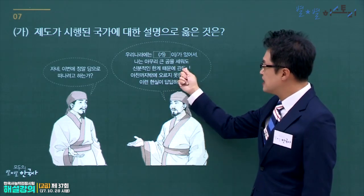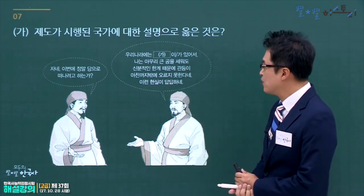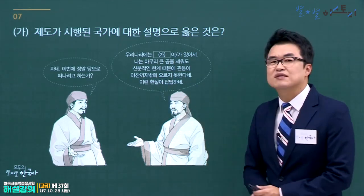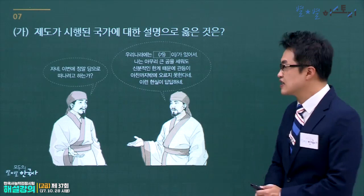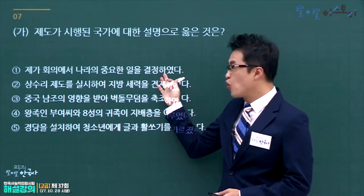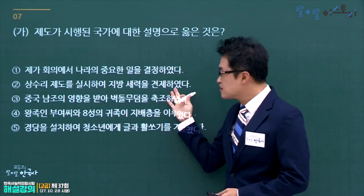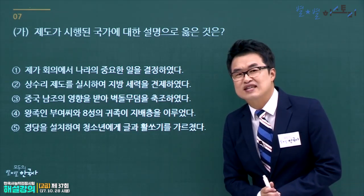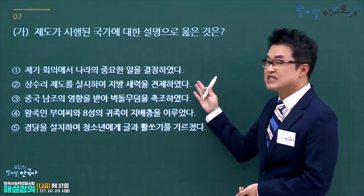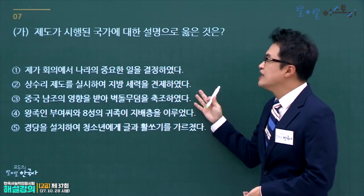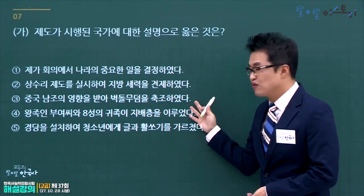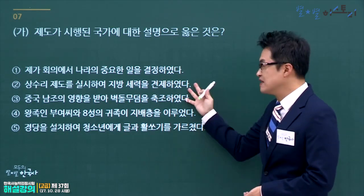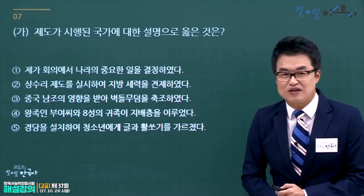골품제도에서 관등이 아찬까지밖에 못 오르는 것은 6두품에 대한 내용입니다. 신라에 대한 설명으로 옳은 것을 고릅니다. 제가회의는 고구려, 상수리제도는 신라, 벽돌무덤은 백제, 문형왕 부여씨는 백제, 경당 설치는 고구려입니다. 지방 세력을 통제하는 상수리제도와 외사정은 신라의 제도입니다. 정답은 2번입니다.